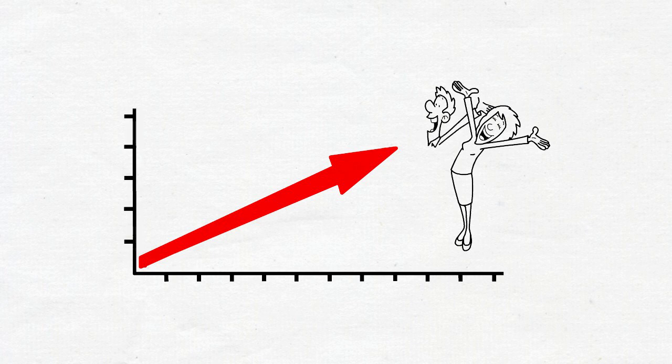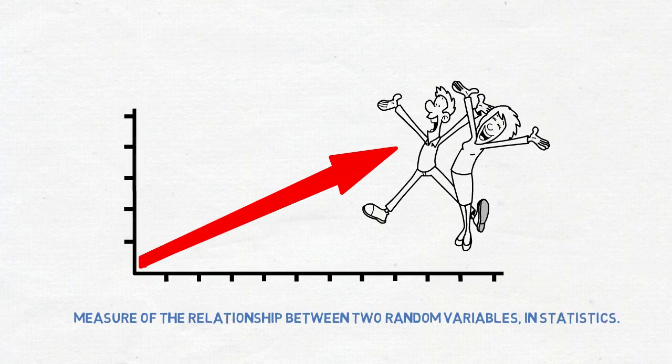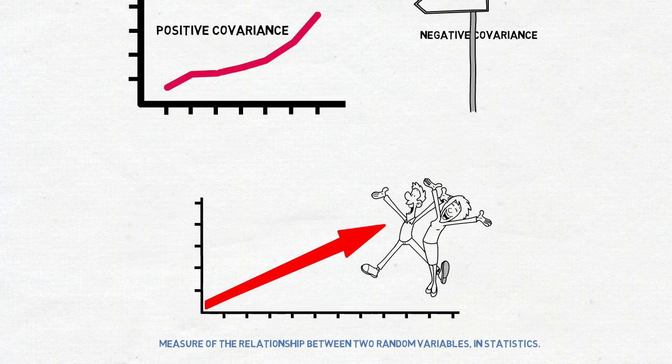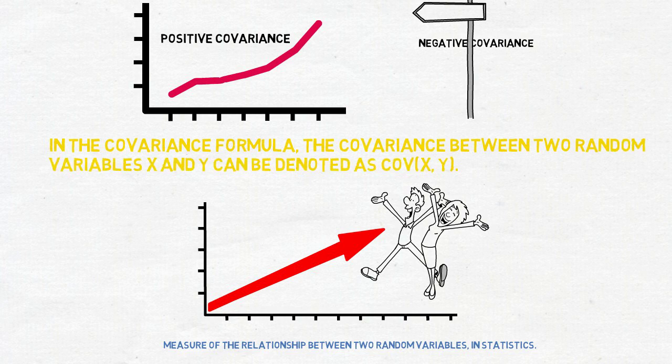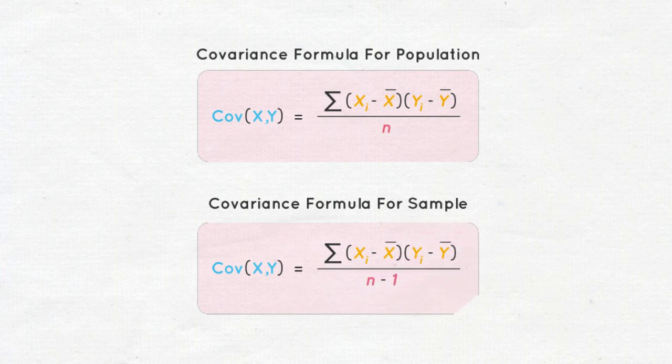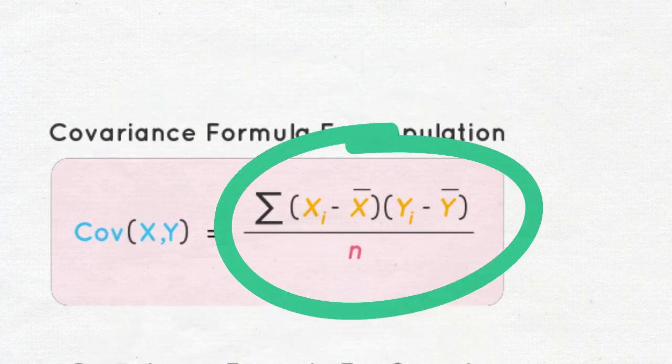As I said before, covariance is a measure of relationship between two random variables. In the covariance formula, the covariance between two random variables x and y can be denoted as Cov(x,y). The formula is summation of (xi minus x bar) into (yi minus y bar) by n.